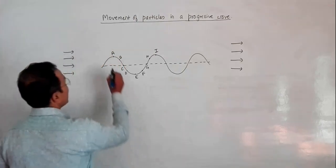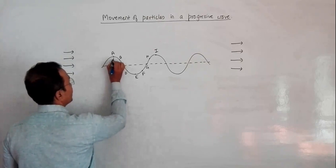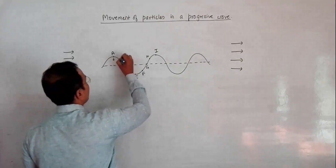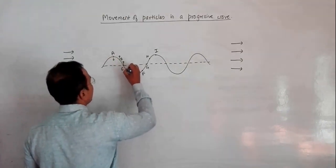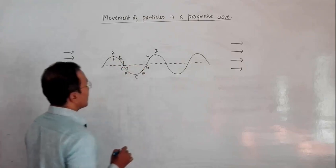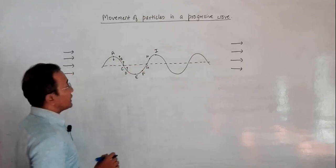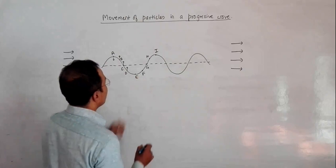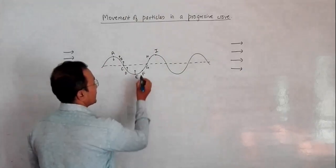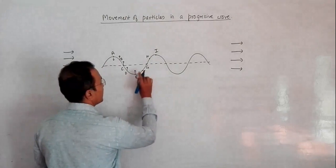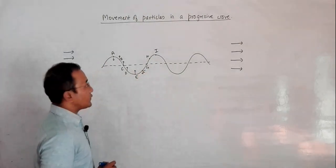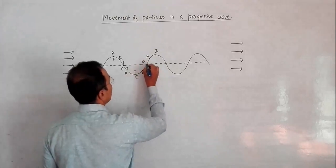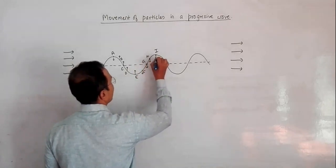So right now A is at the top and is going to fall. B is rising, C is also rising, D is also rising, and E should also rise — because the crest moving here means the trough also comes here. Now if the trough is to come here, F should fall, G should also fall, H should fall, and I should also fall.